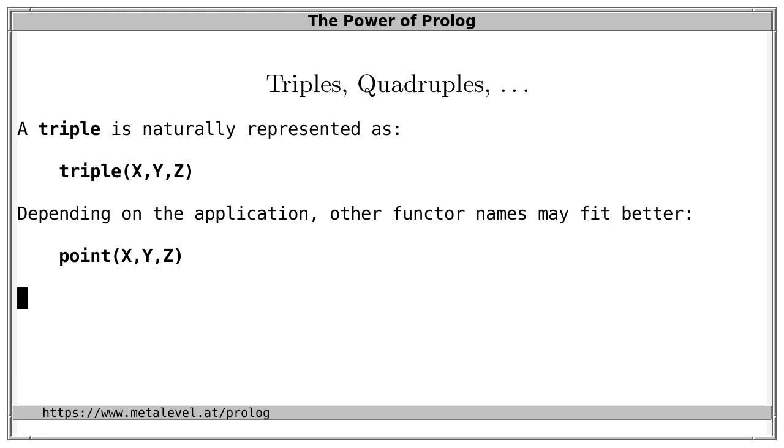We quickly forget these representations and instead note, for example, that a quadruple is naturally represented as a compound term with any fitting functor and arity 4. And the same, of course, also holds for quintuples and so on.